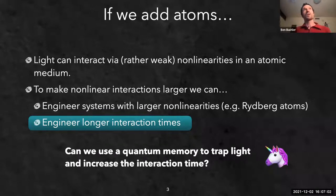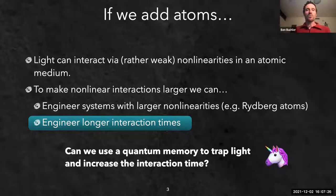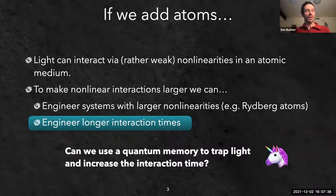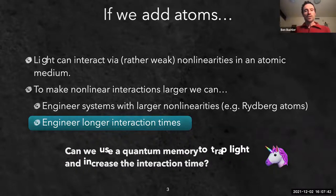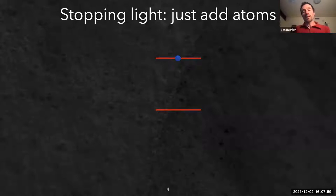Another possibility is to engineer longer interaction times - if light interacts with atoms longer, you accumulate a larger phase shift. This direction is motivated by our program in building optical quantum memories. The goal is: if you have quantum information in photons for quantum key distribution or an optical quantum network, sometimes you want to store those photons and release them at a later time.